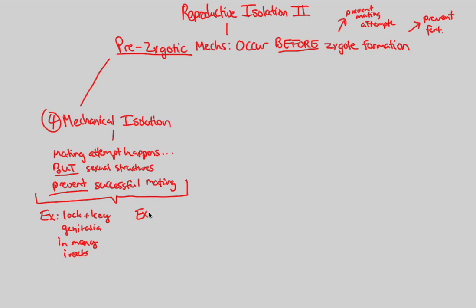We also have one more example — floral structures from the flower world. In some flowers, we see not just temporal isolation but specificity based on specific pollinators. The pollen from specific pollinators can only match up and pollinate with specific flowers. The pollen has to mechanically fit or mechanically get onto the right flower for mating to be successful. If it doesn't, we have mechanical isolation because fertilization has been prevented.